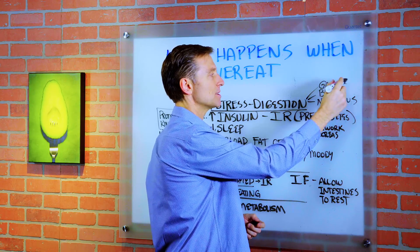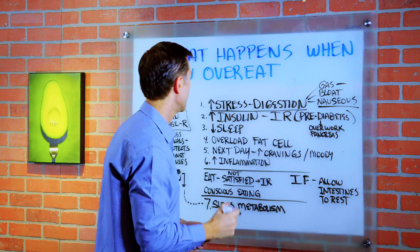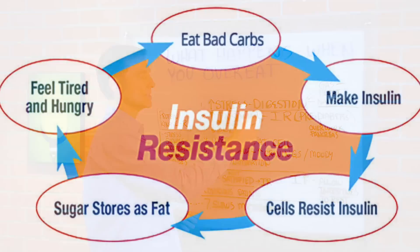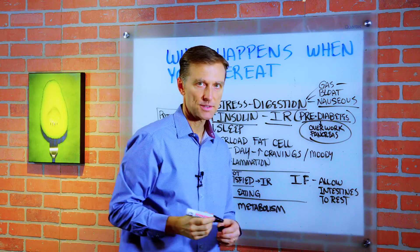So you're going to get gas, bloating, constipation, feel nauseous. And you're definitely going to have a spike of insulin. And eventually, that's going to lead to insulin resistance, which is prediabetes, because you're overworking the pancreas.